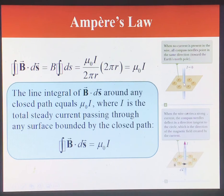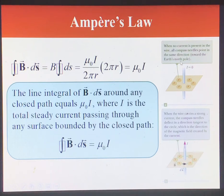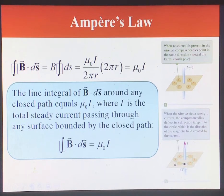We can illustrate Ampere's law using two pictures. In the first picture we have a long wire. When the current is equal to zero there is no magnetic field — the compass needles just point in the same direction, toward the Earth's north pole, which is just the background magnetic field produced by the Earth. When there is current going through the cable, using the right-hand rule, this sets up magnetic fields pointing in the counterclockwise direction.